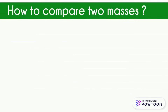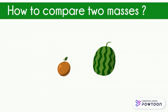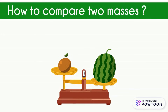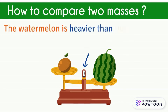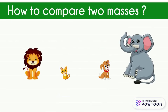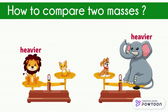How can we compare two masses? To compare the masses of two objects, they can be placed on the pans of the balance. The scale leans towards the heavier side, and the needle indicates the heaviest object. For example, the watermelon is heavier than the orange, or we can say that the orange is lighter than the watermelon. The heaviest object is always on the lowest pan, and the lightest object is on the highest pan. The lion is heavier than the cat; the dog is lighter than the elephant.